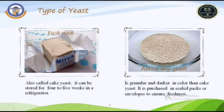Types of yeast: Yeasts are biological leavening agents classified into two main categories. The first is fresh yeast, as shown in the first picture. Fresh yeast is also called compressed or cake yeast. It holds 50 to 60 percent moisture content, so it needs to be stored under refrigeration for four to five weeks.